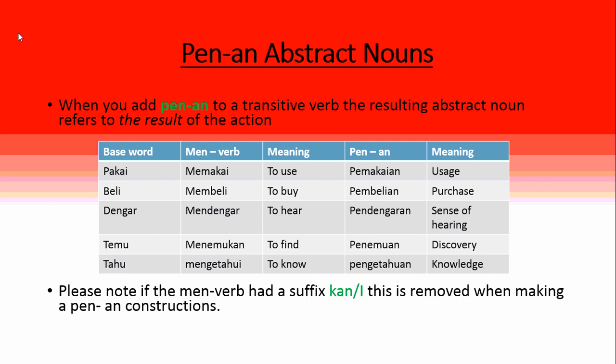For example, the base word pakai — memakai means 'to use' and pemakaian is 'usage,' the result of the action. Next, membeli means 'to buy' and pembelian is 'the purchase,' the result of the action. Please note: if a me verb has a suffix kan or i, this is removed when making a pen-an construction.